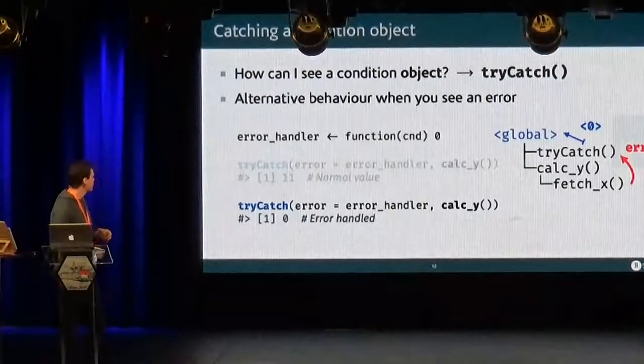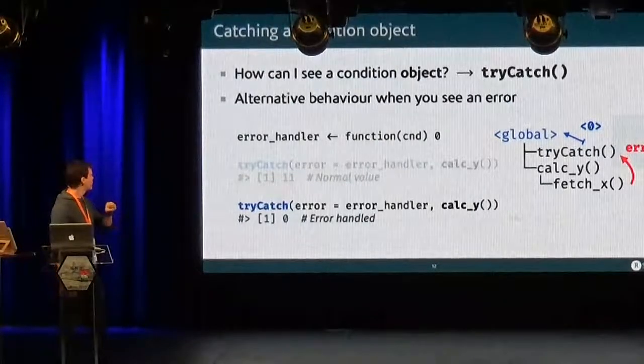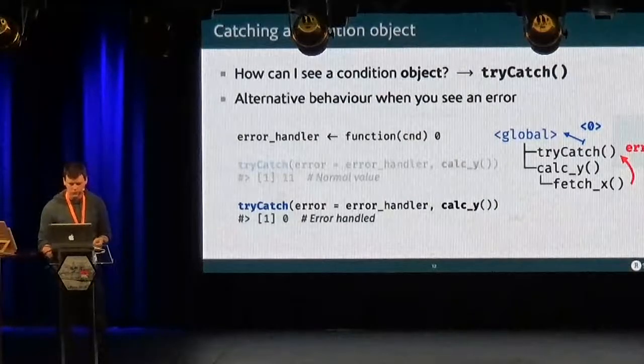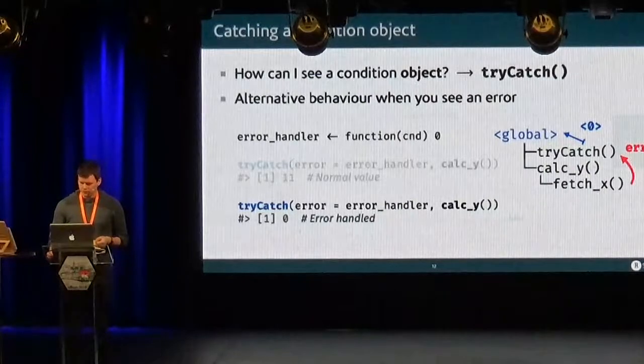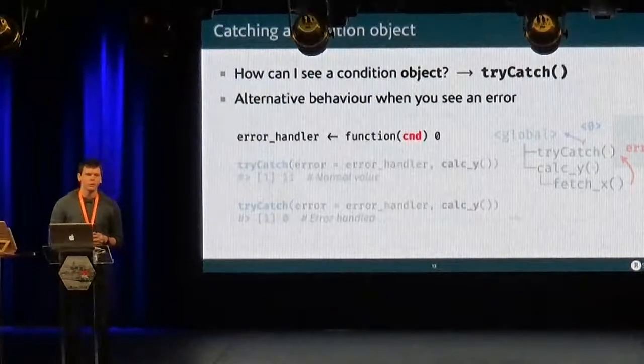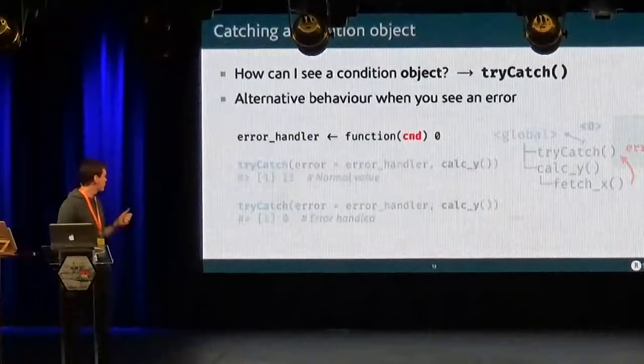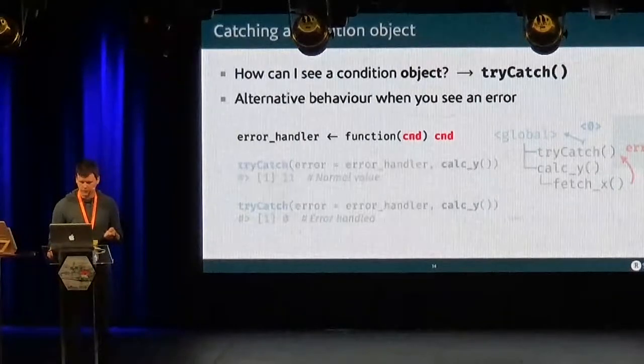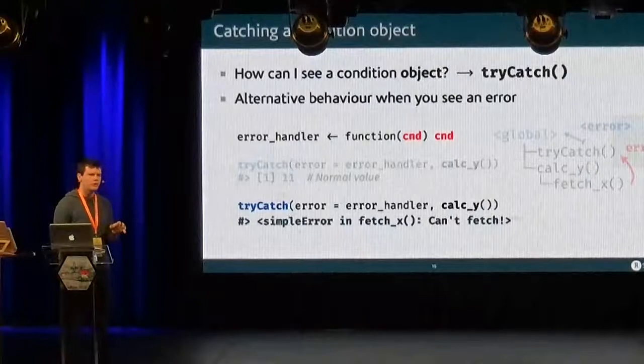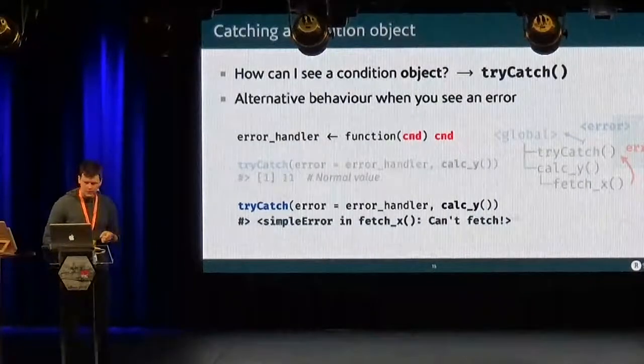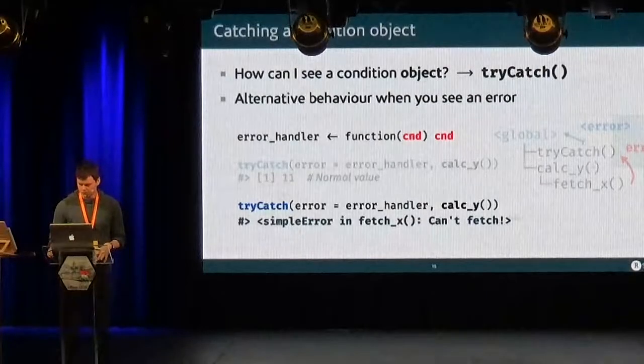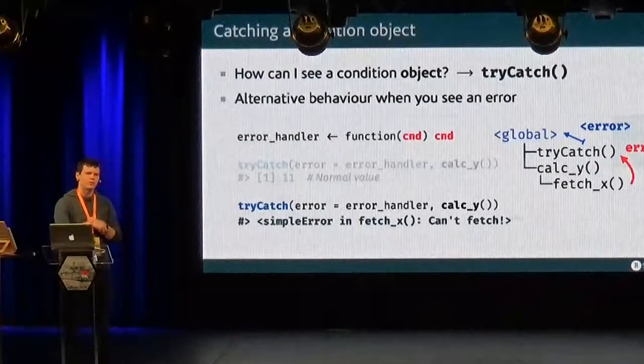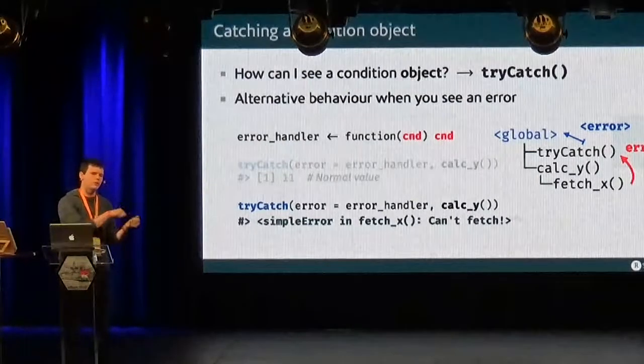And so it looks like this. We still have a jump from fetchX, but this time try-catch will catch the error. And then we return zero as a normal value. And you see that the error handler, it's a function of one argument, actually. We haven't used it here, but what if we return this argument? Just like that. Then we'll get this funny little object, simple error here. And this is actually the condition object. And so in this case, we have the jump, try-catch catches the condition, and it returns it as an object.